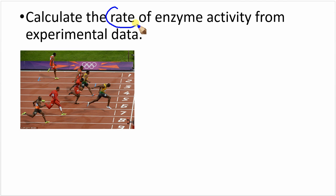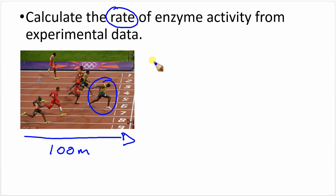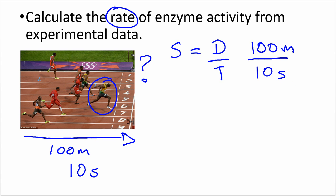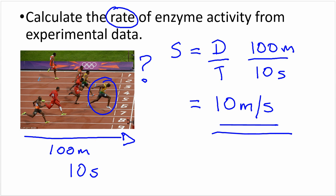Let's begin by thinking what we mean by rate of reaction. Consider a 100-metre race — our top sprinter completes 100 metres in 10 seconds flat. Speed equals distance divided by time: 100 metres divided by 10 seconds equals 10 metres per second. So the sprinter is moving at a rate of 10 metres per second, and this is what we mean when we talk about rates of reaction.